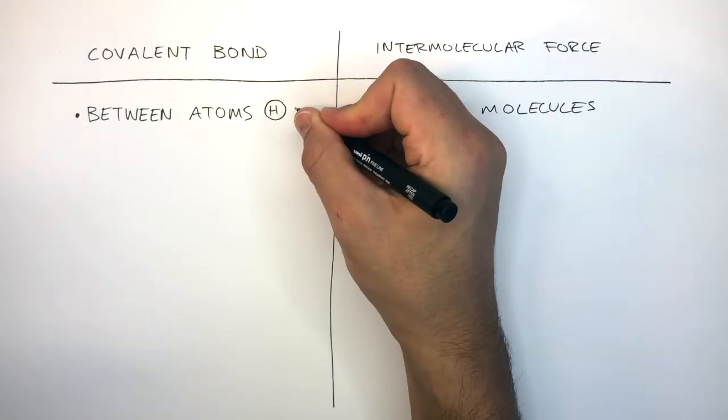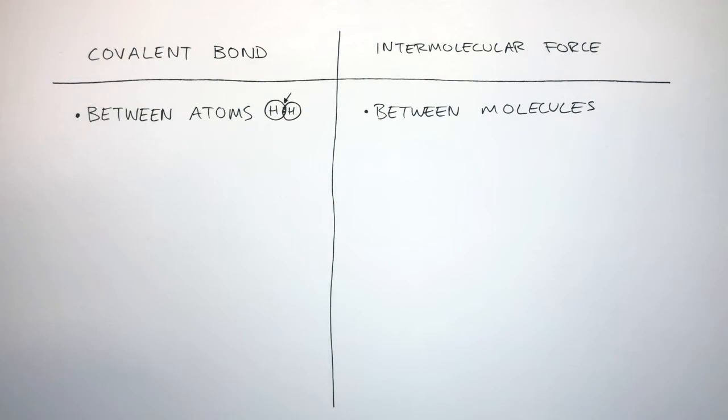This dot and cross diagram is a hydrogen molecule and it points to the covalent bond which is a shared pair of electrons between two non-metal atoms. Whereas, here are two hydrogen molecules and the arrow points to where the intermolecular force would be between the two molecules.